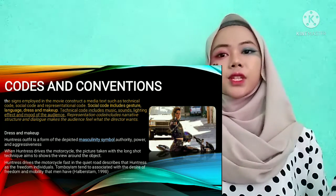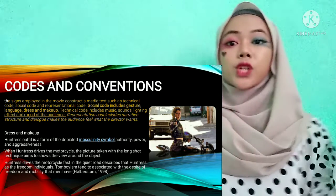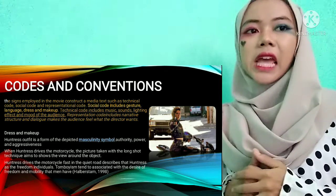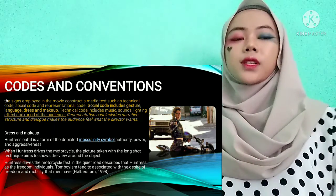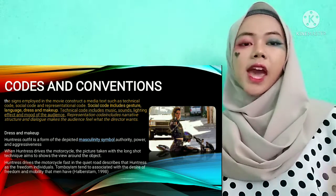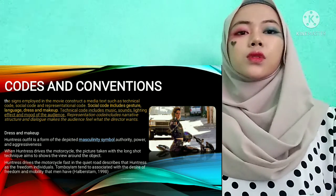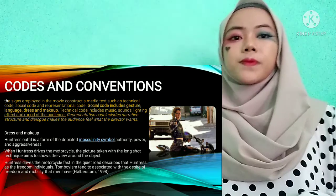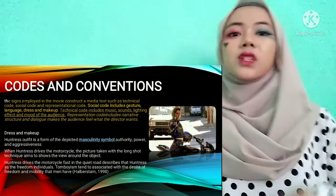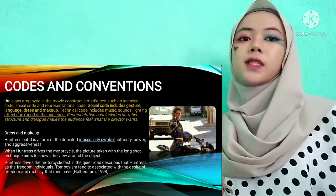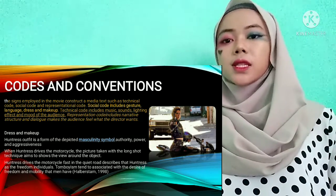Codes and conventions: in this movie there is social code, including gesture, language, dress, and make-up. In this picture, Huntress shows her outfit — commonly black — and she is driving a motorcycle. She is symbolic of masculinity, which symbolizes authority, power, and aggressiveness. When Huntress drives the motorcycle fast on a quiet road, it describes her as a free individual and a tomboy.